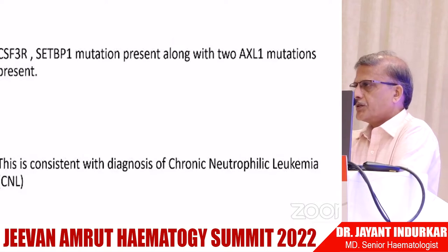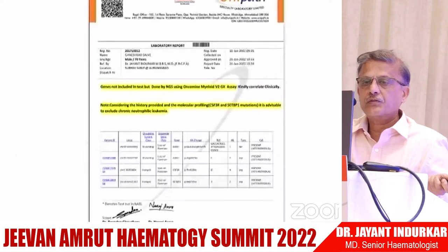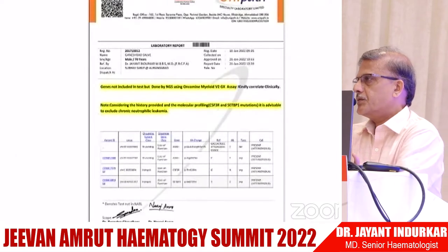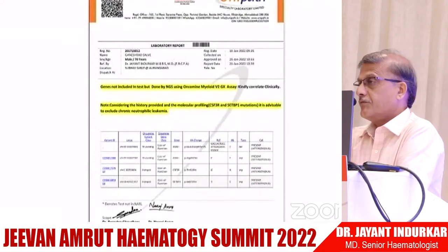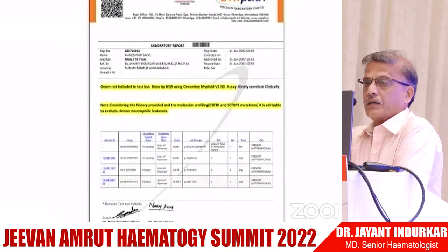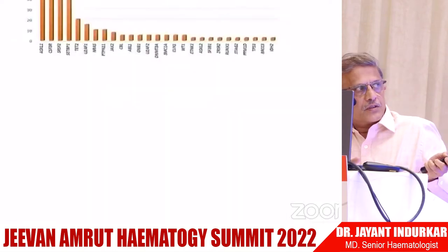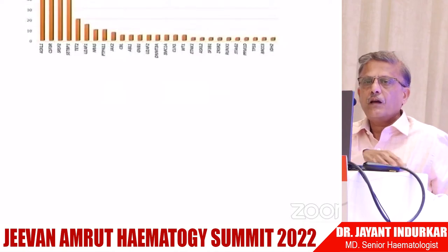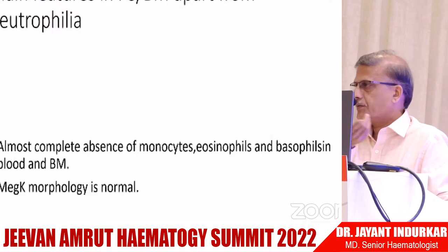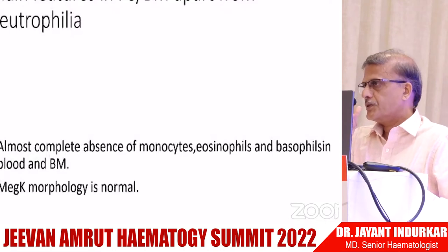As we are doing more and more next generation sequencing, we will probably diagnose more cases of chronic neutrophilic leukemia. The NGS report clearly showed ASXL1 mutation. The main features in peripheral blood and bone marrow — apart from neutrophilia — are the almost complete absence of monocytes, eosinophils, and basophils in both peripheral blood and bone marrow, and normal megakaryocyte morphology.